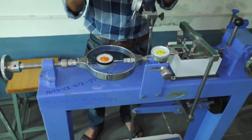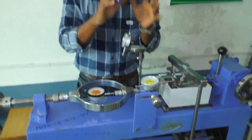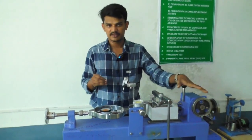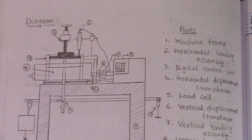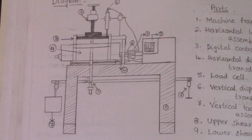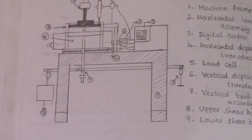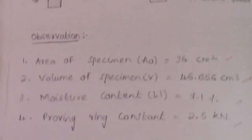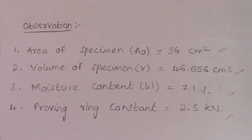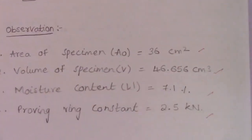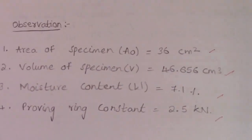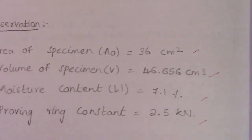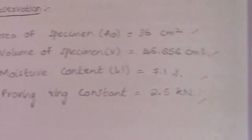We need to plot the graph, and through that graph we can come to know the value of C and phi. Using the formula tau equals C plus sigma into tan phi, we can calculate the shear strength of the soil using direct shear method. These are the observations for direct shear test. Here we can see all the apparatus shown in the laboratory and the parts of the direct shear test machine.